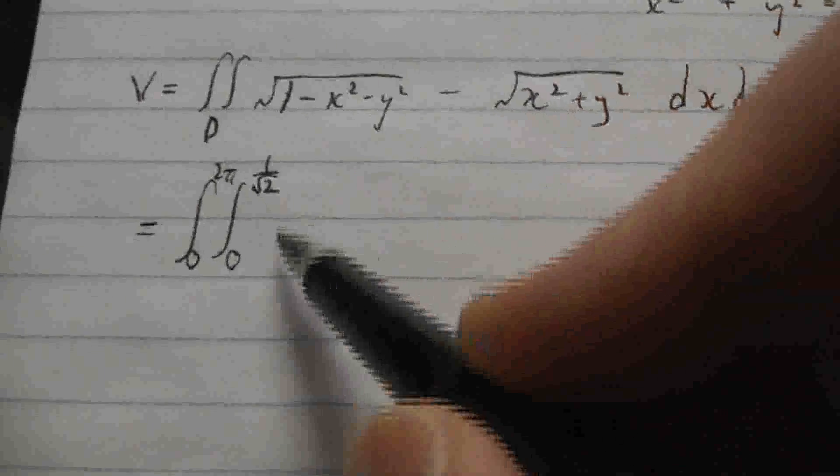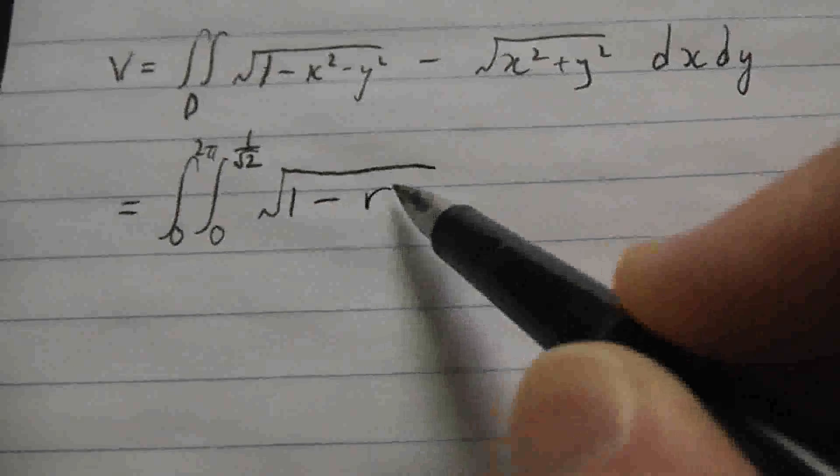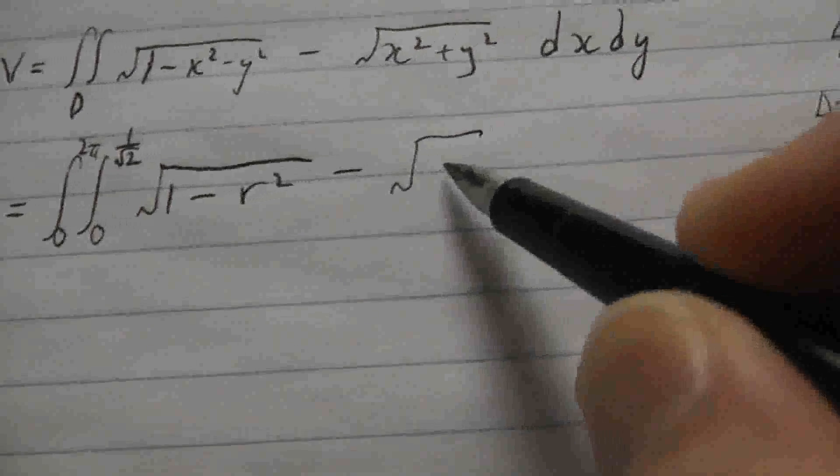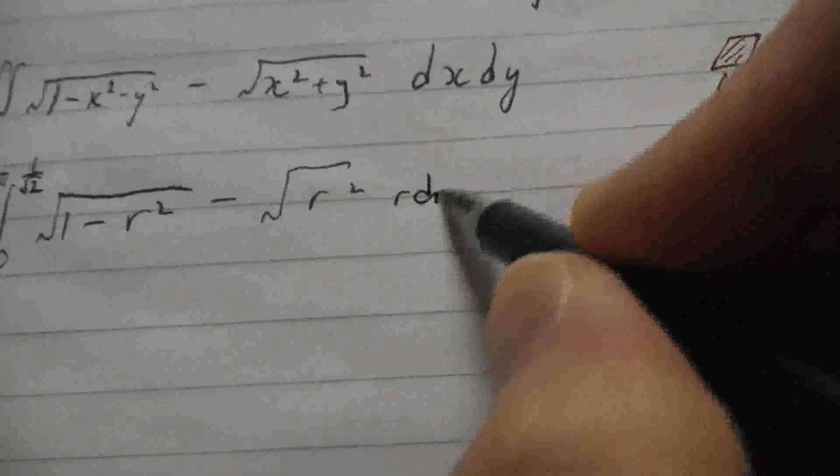So this first one becomes the square root of 1 minus r squared, because x squared plus y squared is r squared, minus the square root of r squared. And then, as we know, dx dy is r dr d theta. And now, actually, you can integrate both of these terms. So from here on out, it's just a straightforward integration problem.